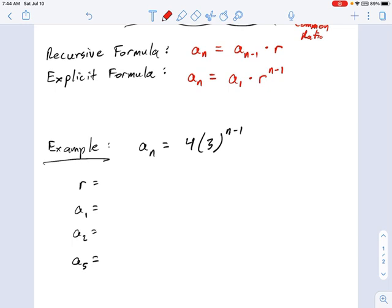Well, take a look at this formula, the explicit formula, and compare it to what we have here. When you see an n minus 1, that's a dead giveaway that whatever the exponent is operating on is your ratio. So we have it right there, r equals 3.